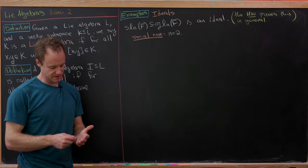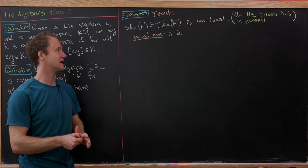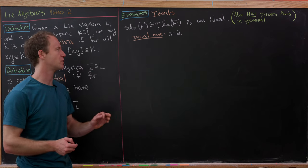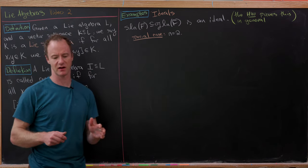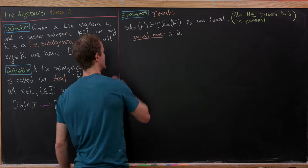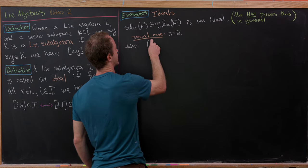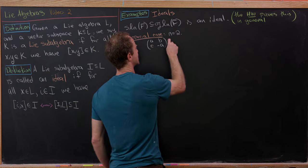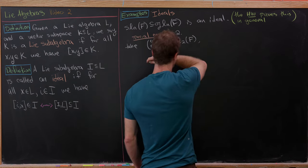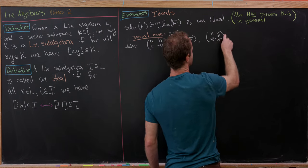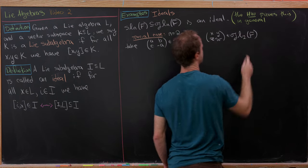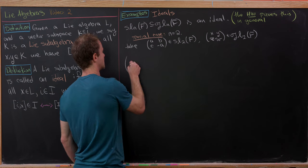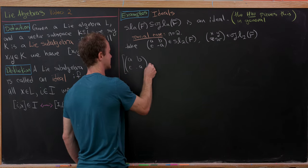Now let's look at some examples of ideals. Starting with: sl(n) is an ideal of gl(n). This follows from the homework on the previous board. We'll look at the special case when N equals 2 to get our hands dirty. So let's take an element of sl(2) of the form [a, b; c, -a] — trace zero forces the bottom-right entry to be minus a — and an element [x, y; z, w] of gl(2,F). Now let's take their commutator and verify we land in sl(2).